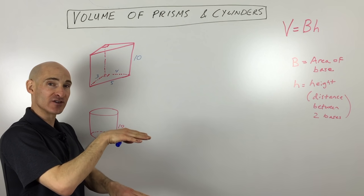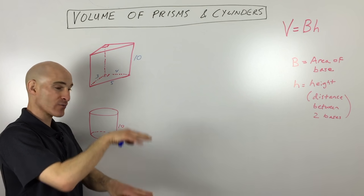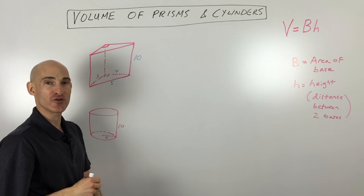The top and bottom are circles, separated by the height, and the two circles are parallel and congruent.